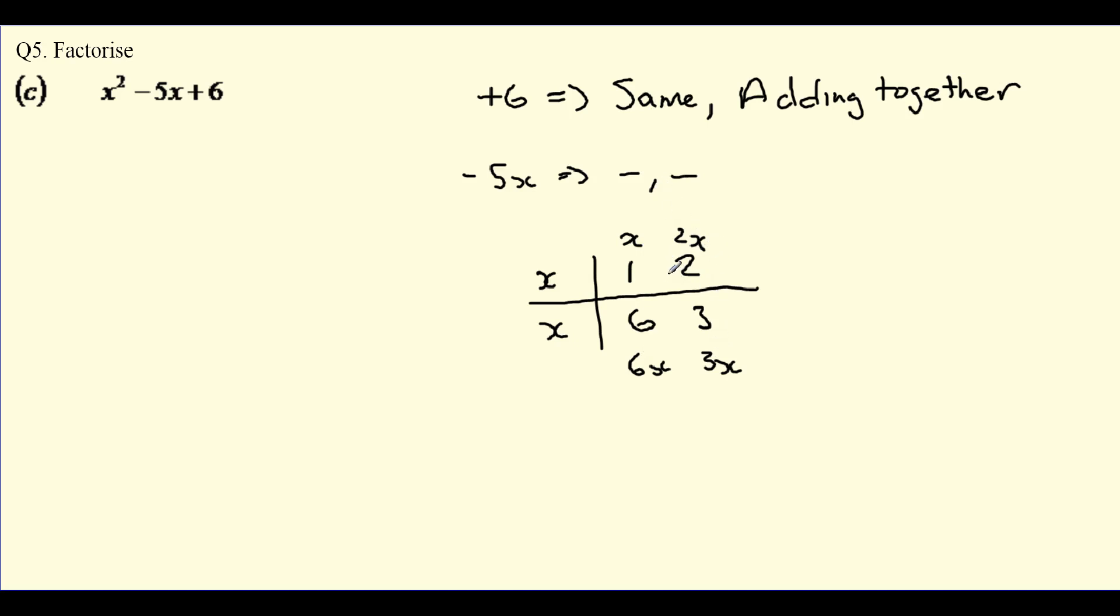So these are the two. We know they're both minuses, so it's going to be the x squared minus 5x, then is x minus 2, x minus 3.